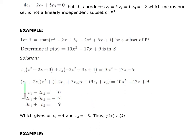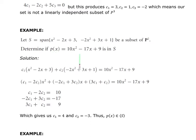We gather coefficients on x squared, the linear term, and the constants, and set them equal to the corresponding coefficients: x squared coefficients must equal 10, linear coefficients must equal negative 17, and constants must equal 9. Solving the system gives C1 equals 4 and C2 equals negative 3. Therefore the polynomial is within the span, and we can also conclude those vectors are not linearly independent since one can be produced from the others.